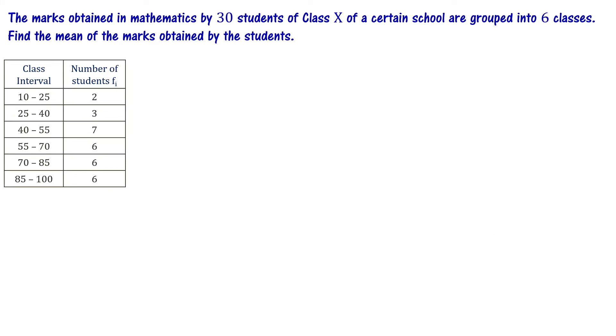The marks obtained in mathematics by 30 students of class 10 of a certain school are grouped into six classes. Find the mean of the marks obtained by the students. The class intervals and number of students are: 10 to 25 has 2 people, 25 to 40 has 3 people.